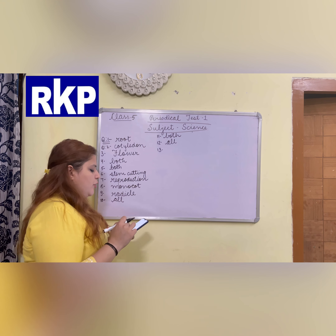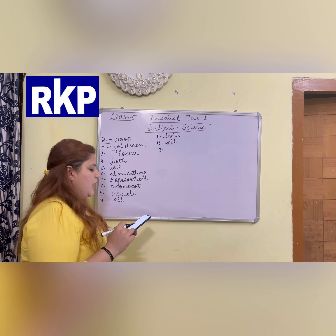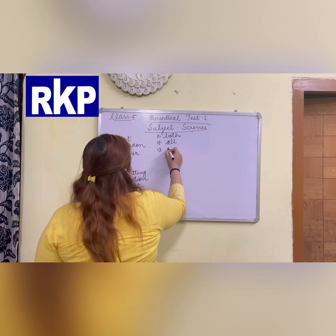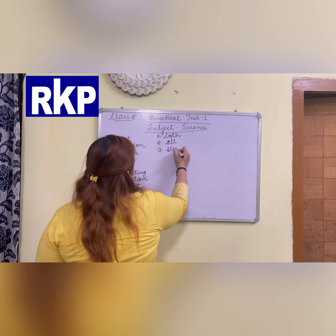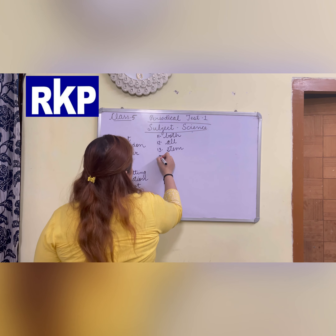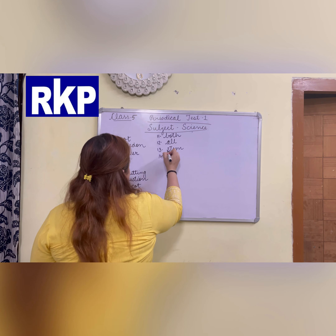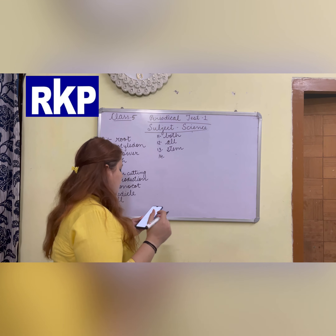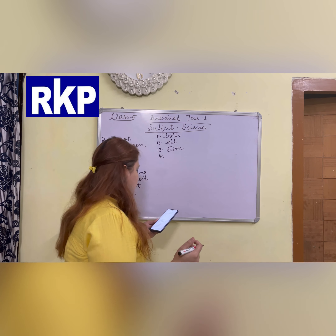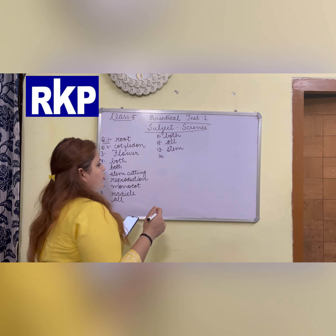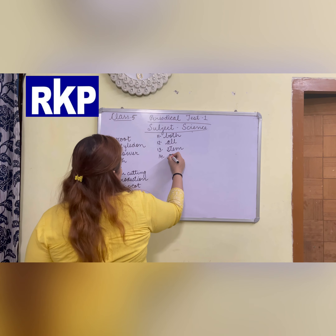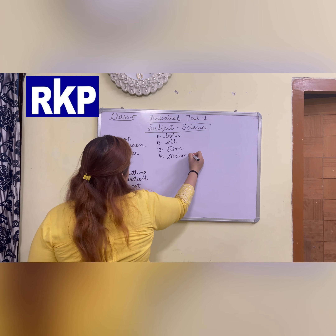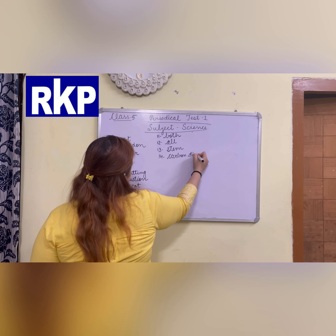In a potato plant, a new plant grows from which part? In a potato plant, a new plant grows from the stem. Next: plants need which gas during photosynthesis? Plants need carbon dioxide gas.